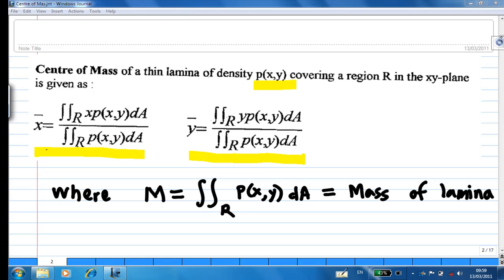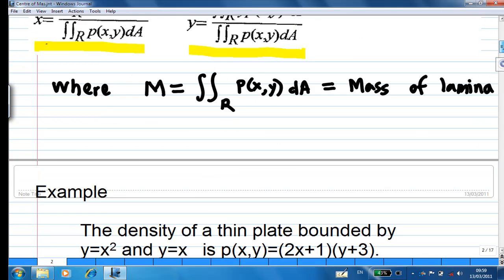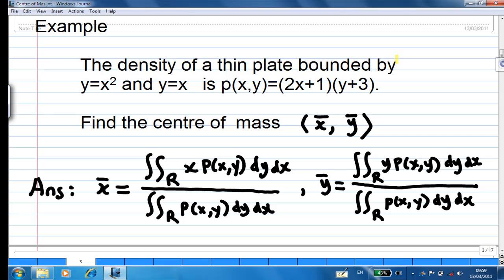Let's look at an example. The density of a thin plate bounded by y equal to x squared and y equal to x is ρ equal to 2x plus 1 times y plus 3. Find the center of mass x̄, ȳ.